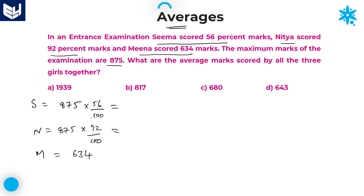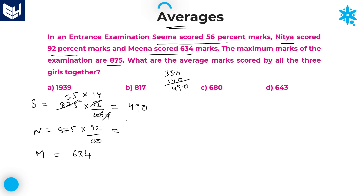First, we will calculate Seema's marks so that you will get the answer easily. 56% of 875: 35 into 10 is 350, and 35 into 4 is 140. If you add these two, you get 490. So this value is equal to 490.